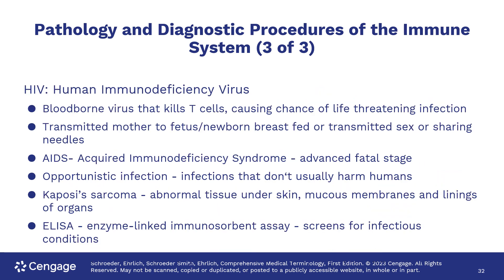HIV is a virus that kills T cells, leaving the patient prone to life-threatening infection. Some of the resulting infections include AIDS — acquired immunodeficiency syndrome — and Kaposi's sarcoma. ELISA is the type of lab test used to detect HIV.